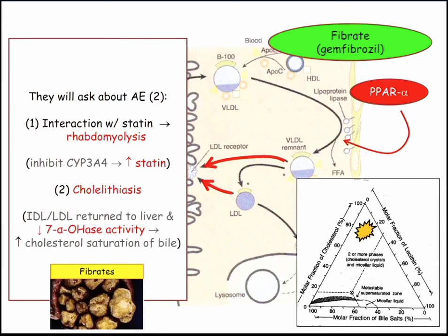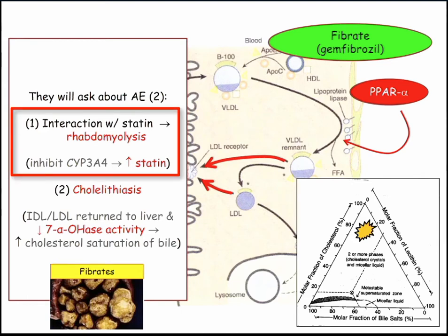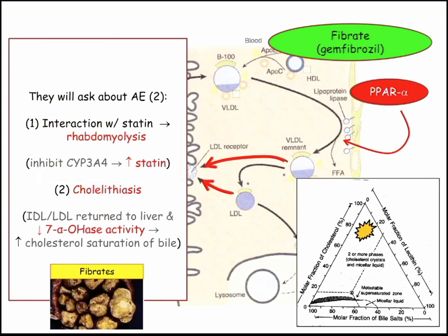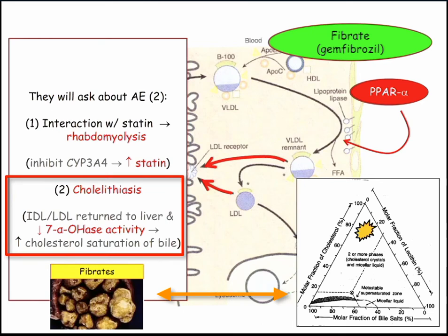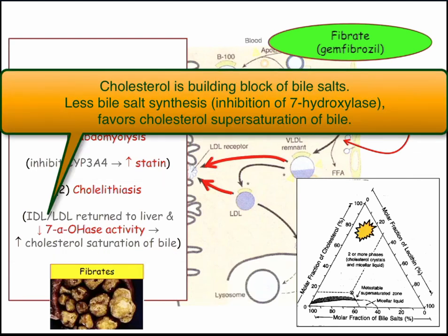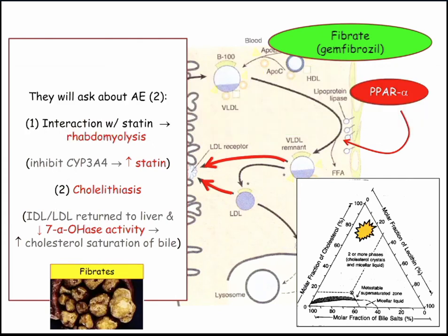The main questions on fibrates are about adverse effects. Number one: fibrates inhibit the metabolic pathway for statins, raising the issue of rhabdomyolysis. They could ask why — fibrates inhibit statin metabolism, so you wind up with higher statin levels, causing rhabdomyolysis and high CK. Number two is cholelithiasis. Stones come from decreased alpha-hydroxylase activity — you're dumping more cholesterol directly into the bile and not making bile salts. Fewer bile salts favors stone development.